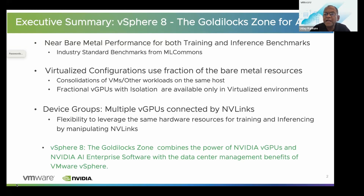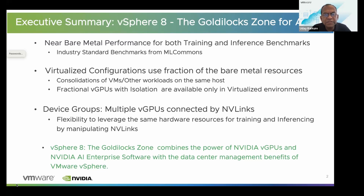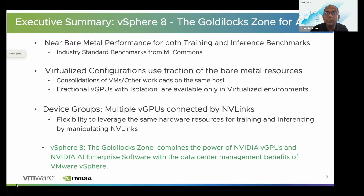Virtualized configurations use a fraction of the bare metal resources, and this is really the key point. When you use bare metal for AI/ML workloads, the bare metal host is completely consumed by your AI/ML. When you virtualize these AI/ML workloads, they are using a fraction of the resources. You could consolidate multiple VMs on the same host or run multiple workloads, which increases the profitability of your data center operations.